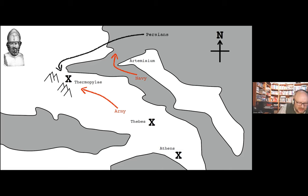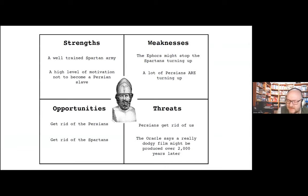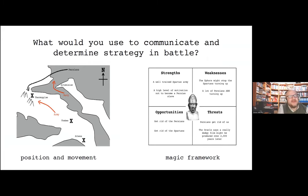I was thinking: how do we determine what to do when we're competing, collaborating, or conflicting with others? We used something called SWOT — Strengths, Weaknesses, Opportunities, Threats. So I created a SWOT for this battle: strength — well-trained Spartan army; weakness — their ethos might stop the Spartans turning up; opportunities — get rid of the Persians; threats — the Persians get rid of us. I put those next to each other and asked: what would you use to determine strategy — position and movement described by a map, or a SWOT diagram?